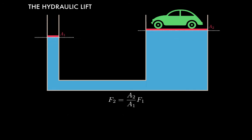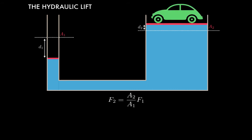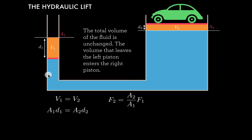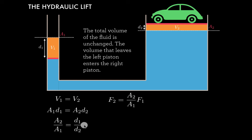If we depress the piston on the left a distance d1, the piston on the right moves up a distance d2. The total volume of fluid is unchanged, so the volume that leaves piston one must equal the volume that enters piston two. Volume one equals A1 times d1, and volume two equals A2 times d2. Setting these equal and rearranging, we get that A2 over A1 equals d1 over d2 — the ratio of the areas equals the inverse ratio of the distances.